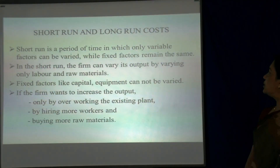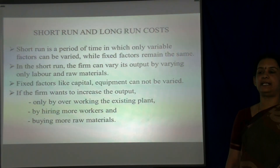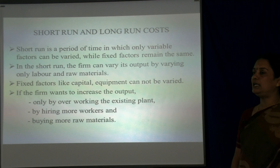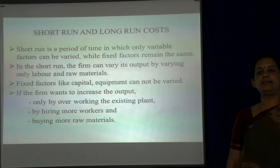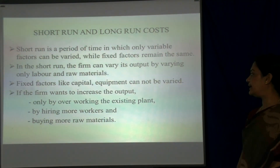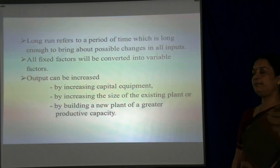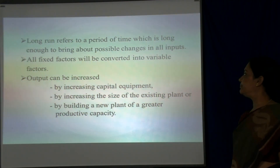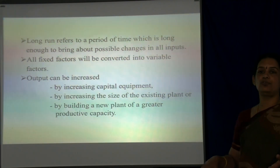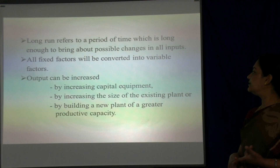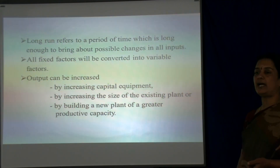Next is short-run and long-run cost curves. The short run is a period of time in which only variable factors can be varied while fixed factors remain the same. In the short run, the firm can vary its output by varying only labour and raw materials; fixed factors like capital and equipment cannot be varied. The firm can increase output only by overworking the existing plant or hiring more workers and buying more raw materials. The long run refers to the period of time long enough to bring about possible changes in all inputs; all fixed factors are converted into variable factors. The entrepreneur has enough time to alter all four factors of production — land, labour, capital and organisation — and can increase output by increasing capital equipment, expanding the existing plant or building a new plant of greater productive capacity.